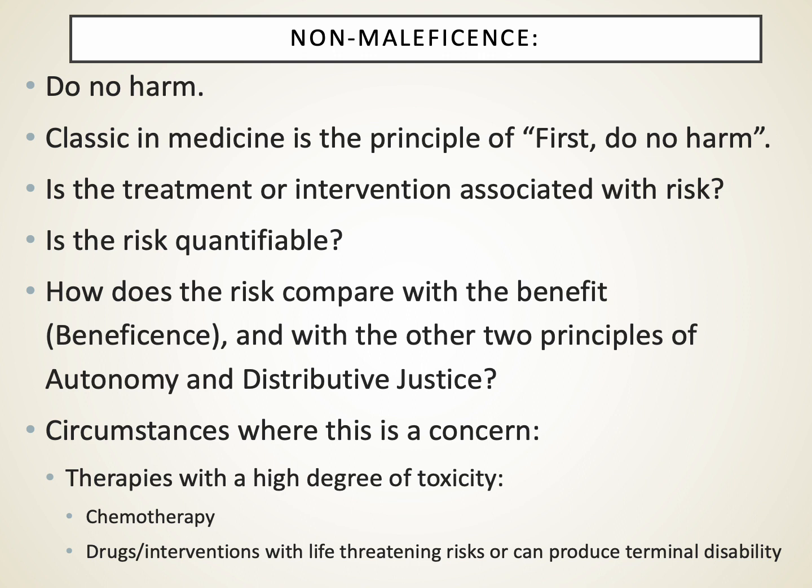We're weighing the decision: a chemotherapeutic regimen might extend a person's life by three months, but it's associated with a lot of toxicity — an increased fatality risk associated with febrile neutropenia or some other major problem. This is the downside of the equation. We evaluate what the risk is and balance it against the benefit.